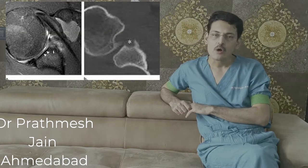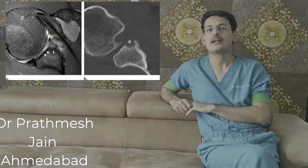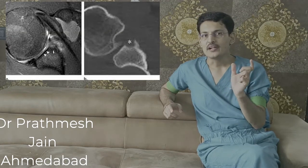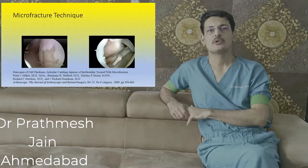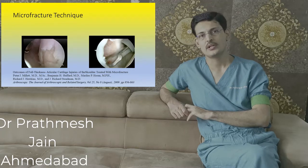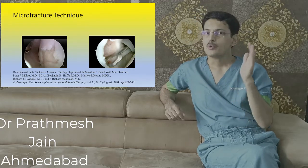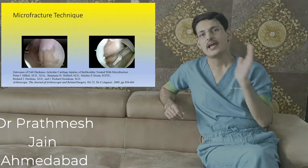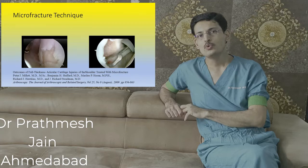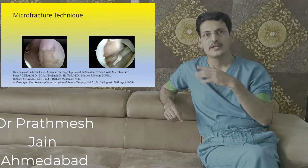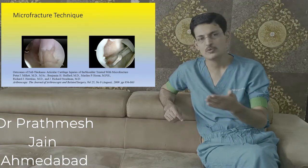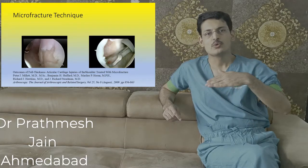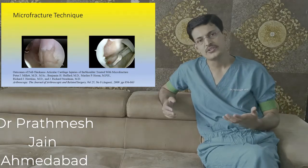Whenever you have a doubt regarding a glenoid lesion, the predominant symptom will be pain, not instability, and the best diagnostic modality is to ideally do a shoulder arthroscopy, which is both diagnostic and therapeutic. What we usually do is clean that particular area of the cartilage defect; if there are any loose bodies, we remove them, debride the edges, and occasionally perform RF chondroplasty.